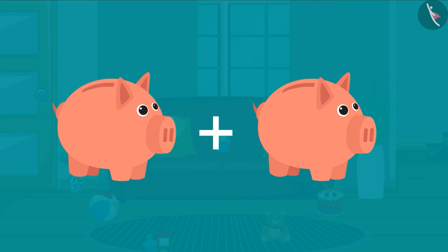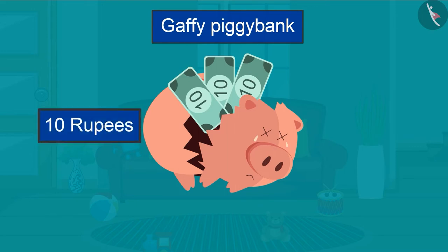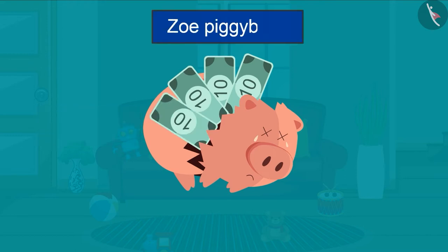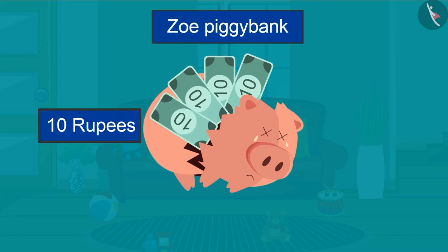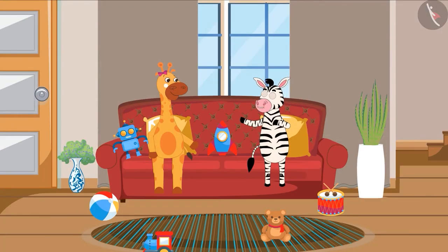Come, let's first count the money from my piggy bank. In my piggy bank there is 10, 20, 30 rupees. In my piggy bank there is 10, 20, 30, 40 rupees. You have 30 and I have 40 rupees.